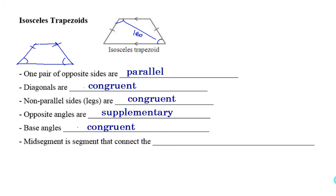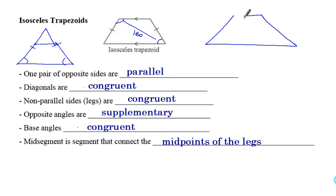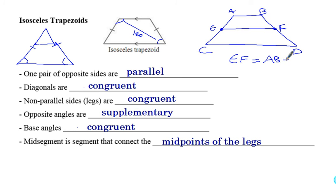If you remember from the triangle unit, we had something called a midsegment, and we also have midsegments of trapezoids. The midsegment of a trapezoid connects the midpoints of the legs. So if I have an isosceles trapezoid with vertices A, B, C, D and midsegment EF, then EF equals AB plus CD divided by 2. You add the two bases together and divide by 2 to find the length of the midsegment.